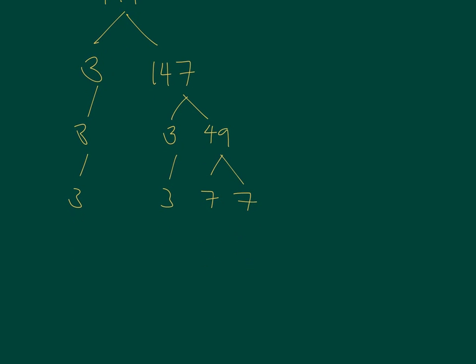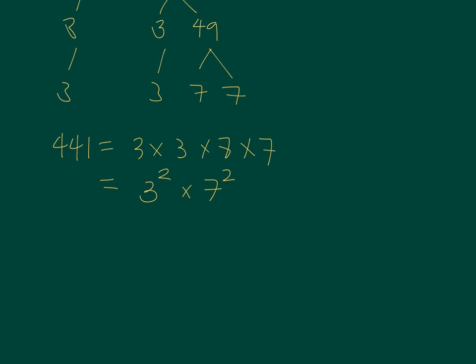So by prime factorization, 441 is the same as 3 times 3 times 7 times 7. Or in index notation, it is 3 squared times 7 squared. So if we want to get the square root of 441, we just get the square root of 3 squared times 7 squared.